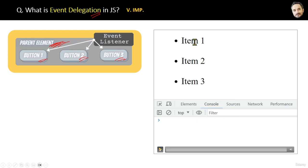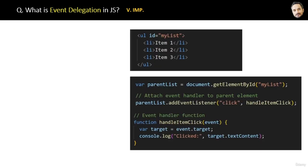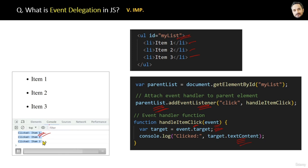When you click item 1, 'item 1' is logged in the console; on clicking item 2, 'item 2' is logged, and so on. You might think we attached event handlers to each child element, but that is not the case. In the code, we have a parent list 'myList' with child items, and we are only attaching the event handler to the parent element. Inside the function body, we use the event object to log the target element's text content. On clicking any child element, we get the target text content of that specific child — that is the magic of event delegation.